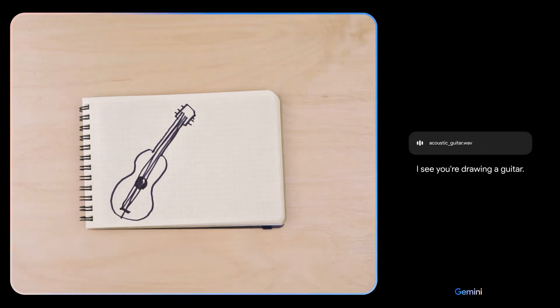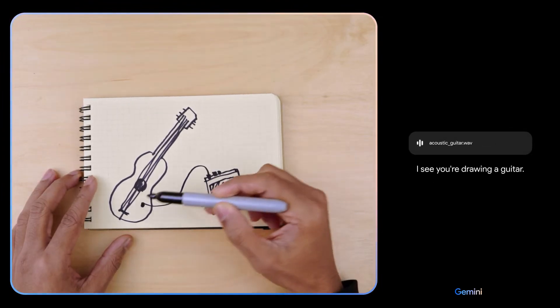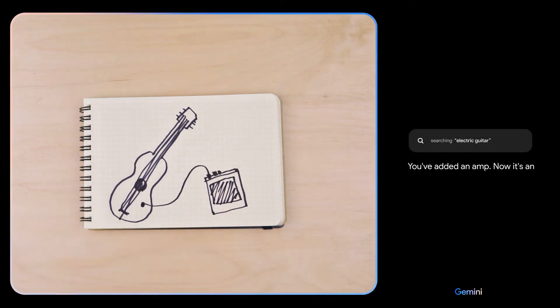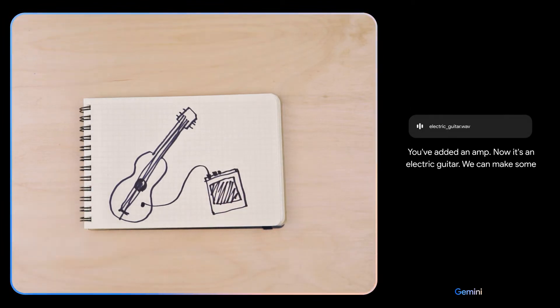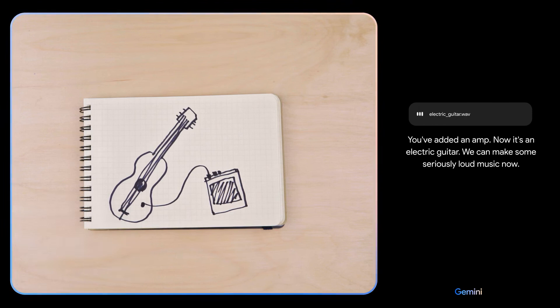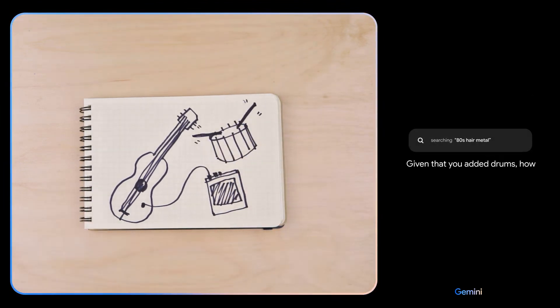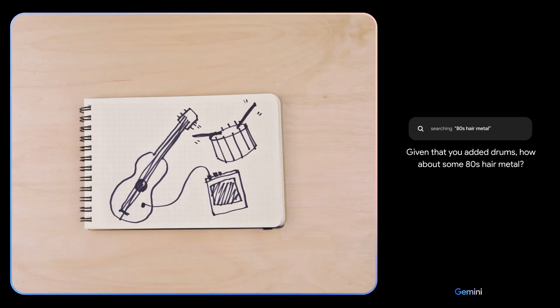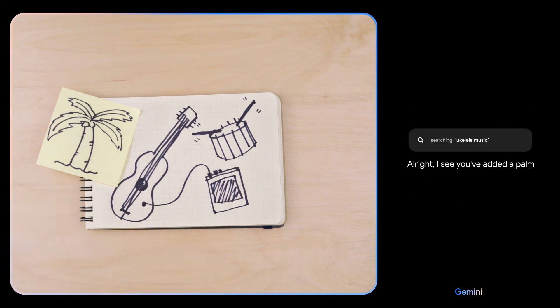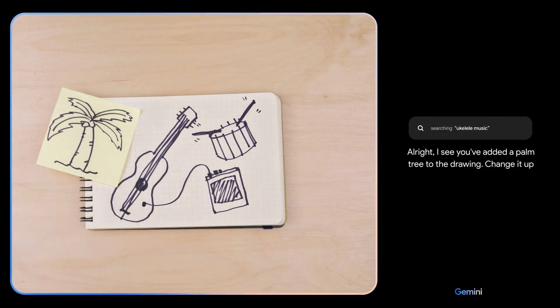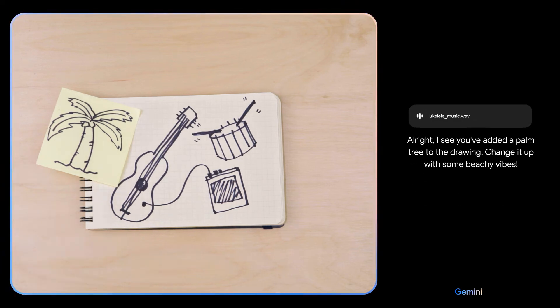I see you're drawing a guitar. You've added an amp. Now it's an electric guitar. We can make some seriously loud music now. Given that you added drums, how about some 80s hair metal? All right, I see you've added a palm tree to the drawing. Change it up with some beachy vibes.